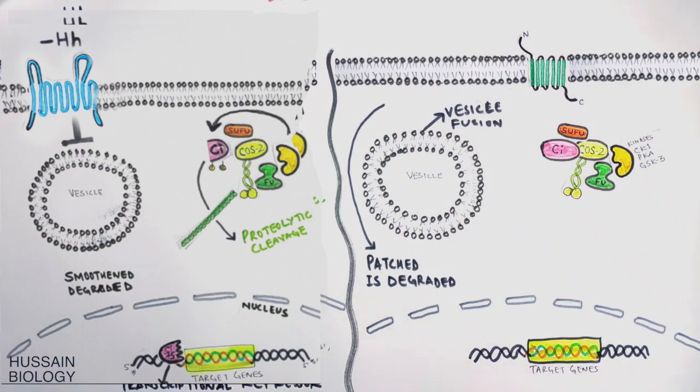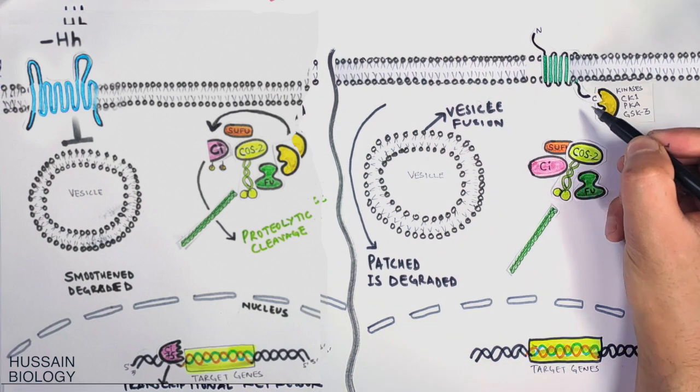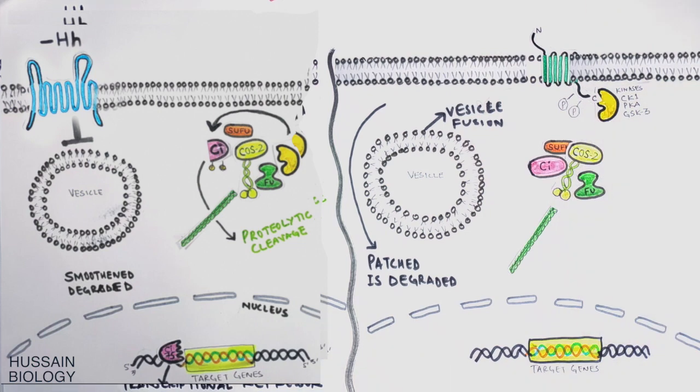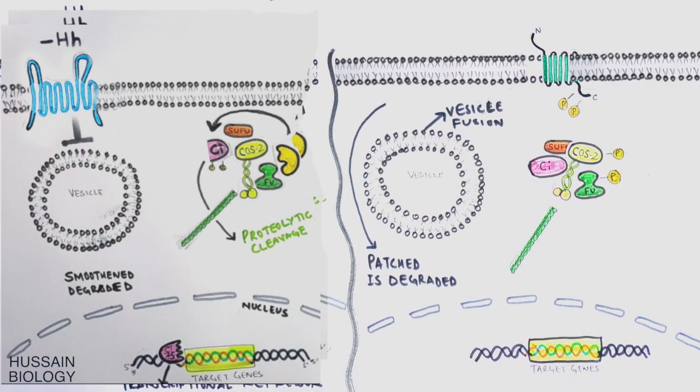When the Smoothened protein is embedded into the membrane, it's first acted upon by kinases like PKA and CK1. These kinases phosphorylate the C-terminal domain of Smoothened protein as shown in the diagram. The kinase complex also phosphorylates the Cos2 and Fu protein. Now the phosphorylated Smoothened protein recruits Cos2 protein and Fu protein towards itself.